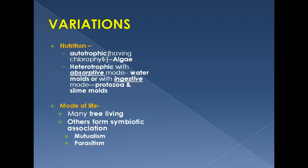Regarding variations in nutrition, protists are autotrophic as well as heterotrophic. Autotrophic protists include algae because they can synthesize their own food due to chlorophyll. Heterotrophic protists include those with an absorptive mode like fungi — such as water molds — whereas the ingestive mode of nutrition is found in animal-like protists and some fungi-like protists like slime molds.